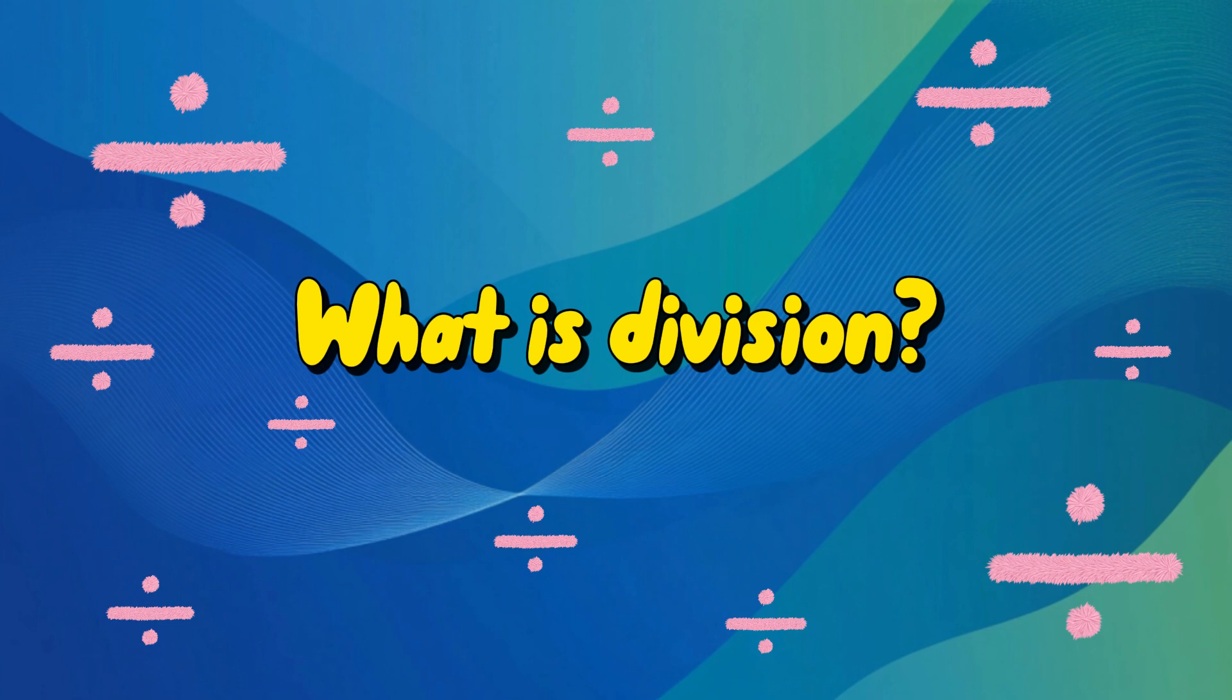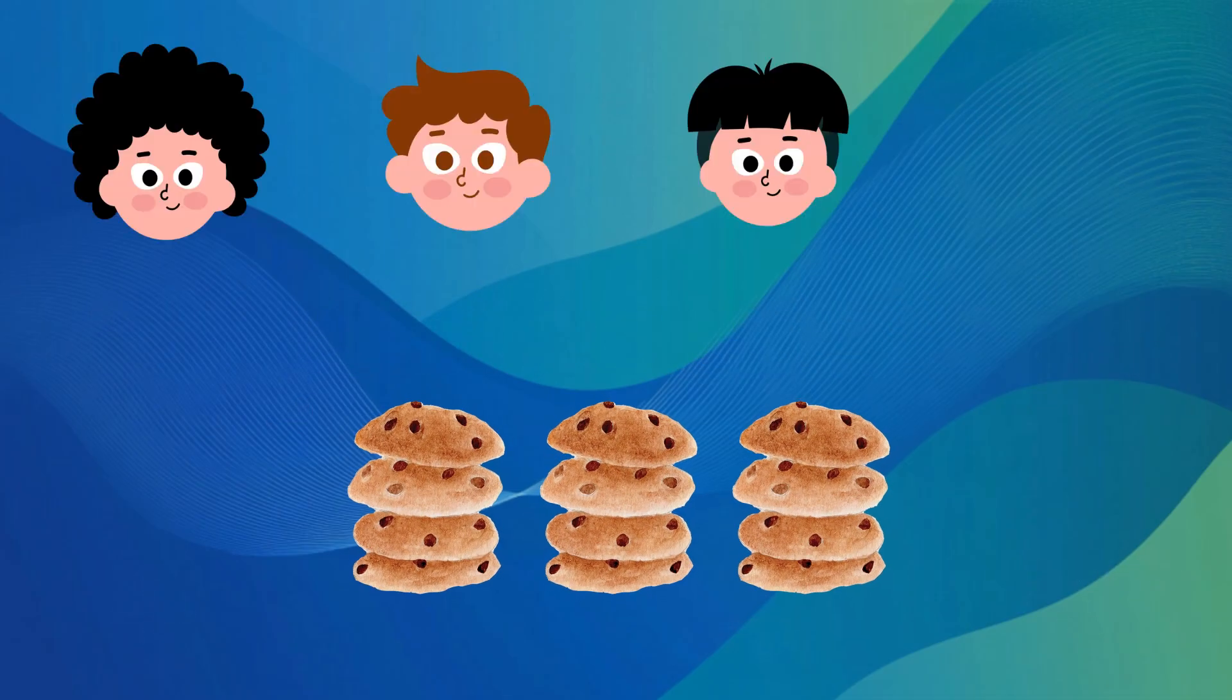Division is simply splitting something into equal parts. Let's look at an example. Imagine you have 12 cookies and 4 friends. If you want to share the cookies fairly, how many does each friend get? That's division.